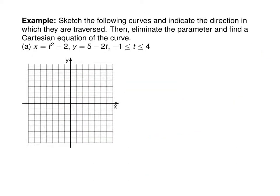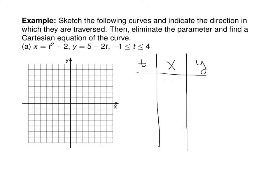Next we discussed parametrized curves. You can think of t as another variable, like time, and you're looking at how a particle traces a path as time goes along. The best way to plot these is to plot some points. We pick a t, find an x and a y; we're told t is between −1 and 4. When t = −1, x = −1 and y = 7.